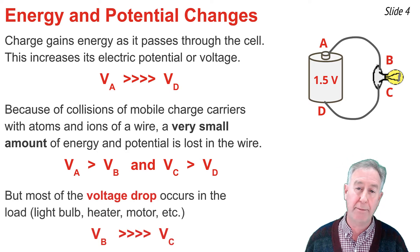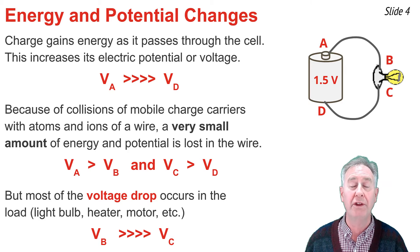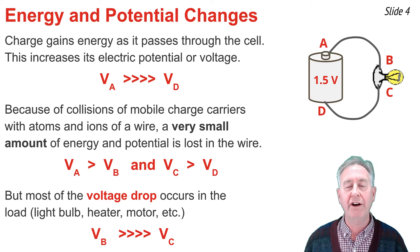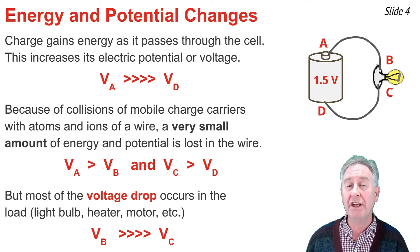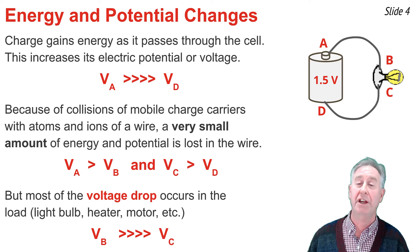But the major voltage drop or loss in energy and electric potential occurs in the load, in the light bulb or the heater or the motor. There, electrical energy is transformed into other forms of energy and a large voltage drop results. Thus, the electric potential at B is significantly greater than it is at location C.